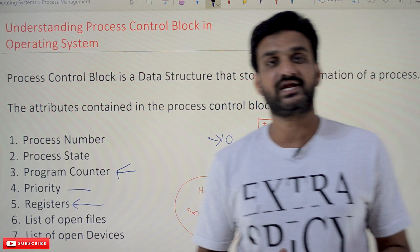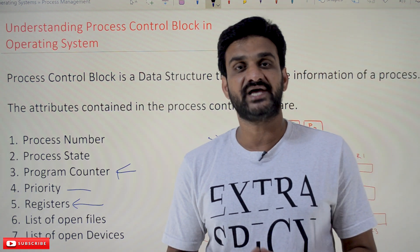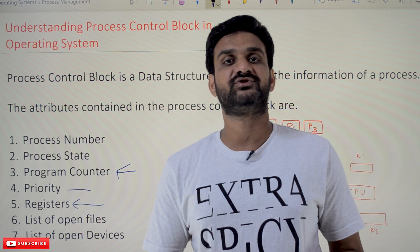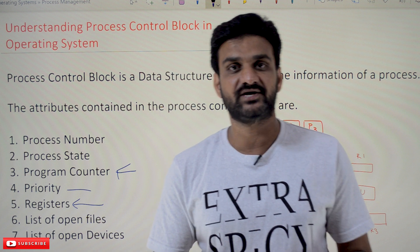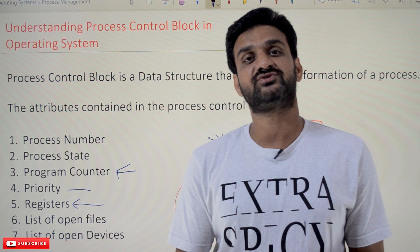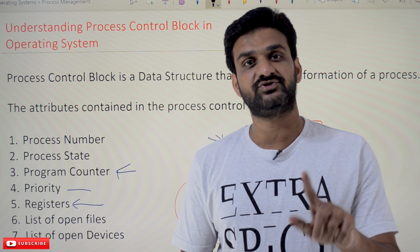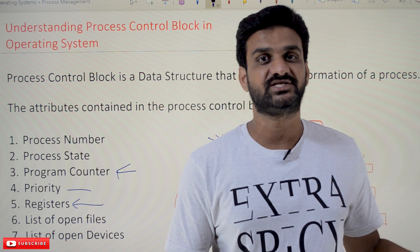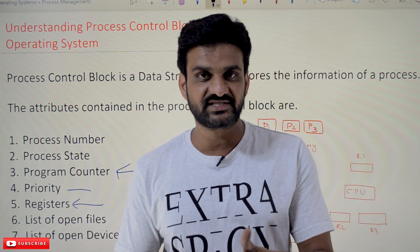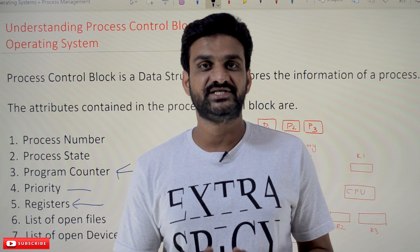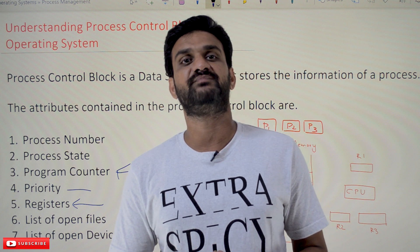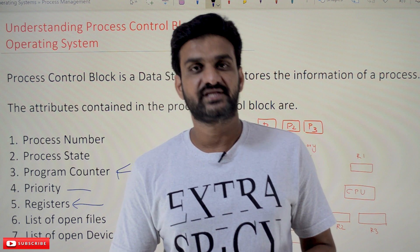These are all the attributes that are maintained in the Process Control Block. Hope you got the clarity on this concept. Thanks for watching. If you haven't subscribed to our channel, please subscribe and press the bell icon for the latest updates. If you have any doubts, please post in the comment section below. If you found this video helpful, please give us a like and share this video with your friends so that they will also get benefited. Thanks for watching.